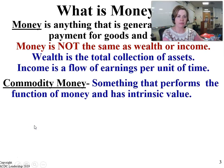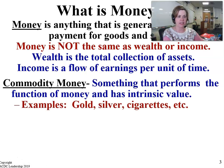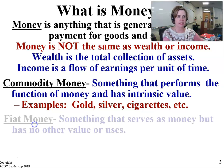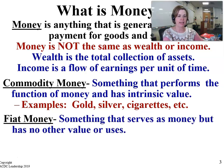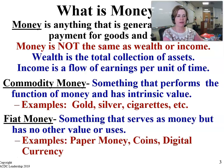Commodity money refers to something that performs the function of money and has an intrinsic value — for example, gold or silver. Fiat money is something that serves as money but has no other value or use, so the paper currency or coins that you carry around in your wallet or your purse.